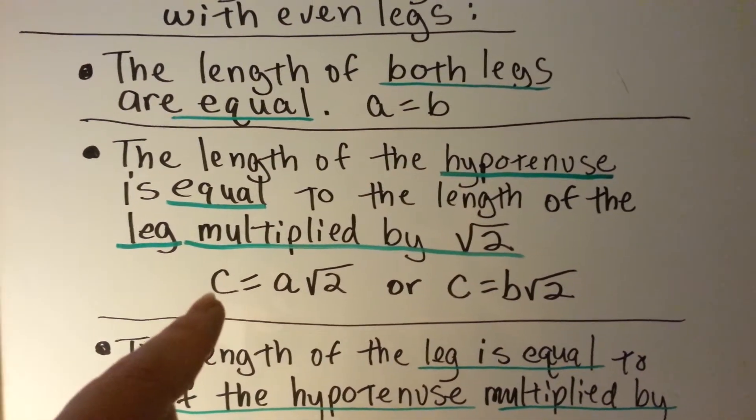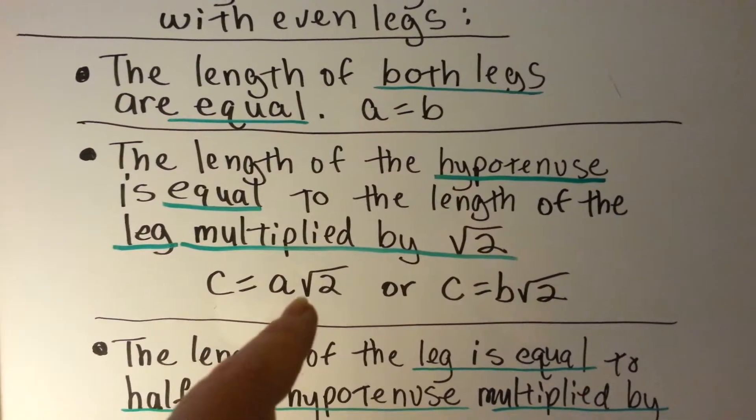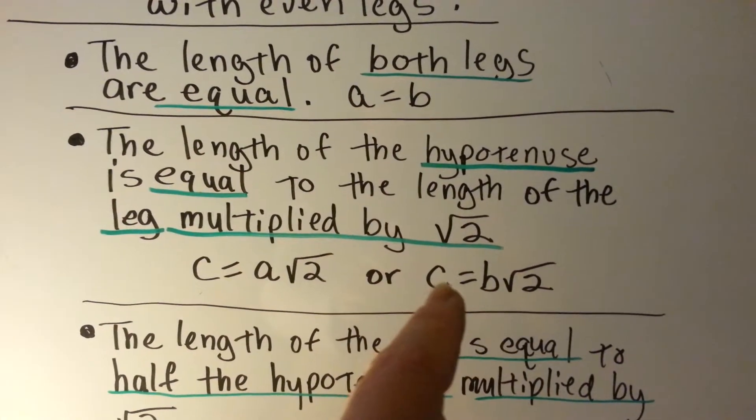The length of the hypotenuse is equal to the length of the leg multiplied by the square root of 2. So, the hypotenuse C is equal to a leg multiplied by the square root of 2. Or, if you want to find the leg B, it would be this way.